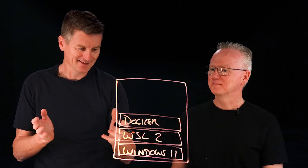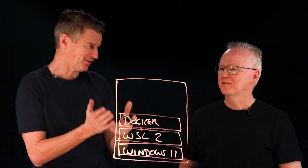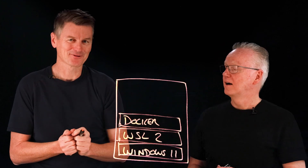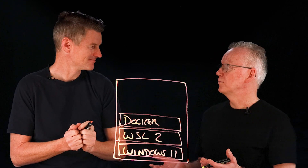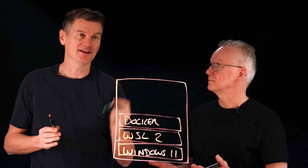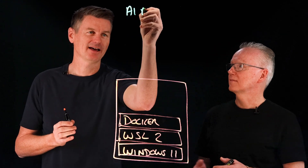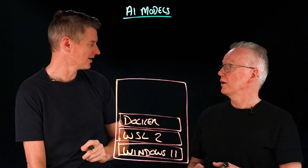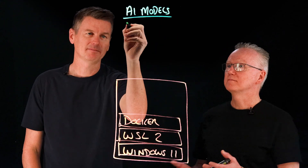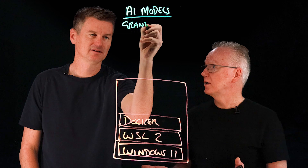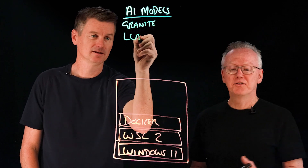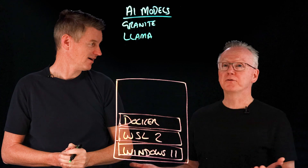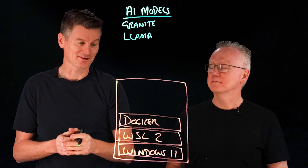Now we need some AI models. Where did you get them from? I pulled them down from olama.com. What are some of the models you actually took? I started with Granite — IBM's Granite model — and Llama. There are so many other models you can pull down. A whole bunch of open source models.